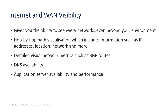ThousandEyes gives you that visibility, whether it's across the WAN or the internet. You can see not only your own network but beyond your network across the internet as well. A key feature is hop-by-hop path visualisation, which includes information such as IP addresses, locations, and networks that each hop belongs to. It also provides a detailed view of network metrics such as BGP routes, DNS availability across different providers, and application and server availability and performance — all within one aspect of ThousandEyes.